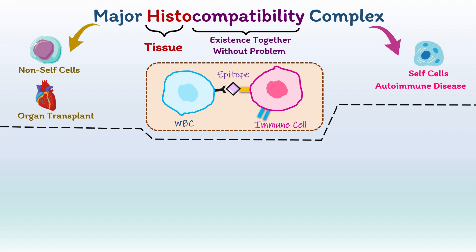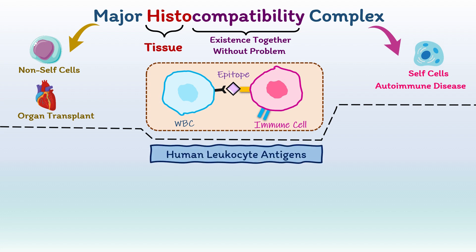Major Histocompatibility Complex is also abbreviated as MHC. In humans, MHC is called Human Leukocyte Antigens, and its proteins are encoded by MHC genes found on chromosome 6.